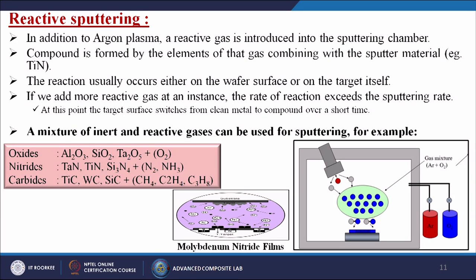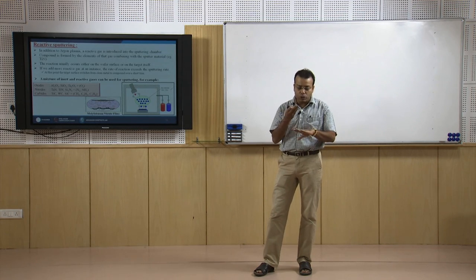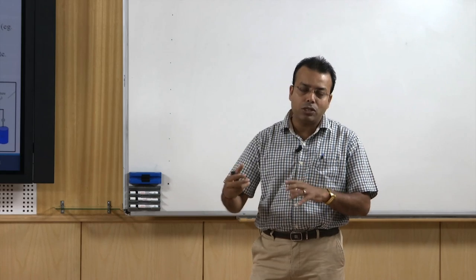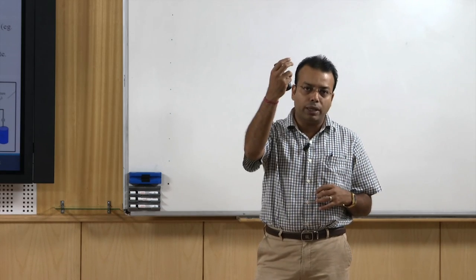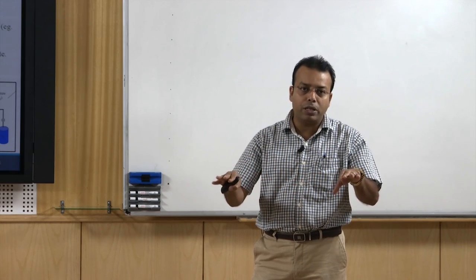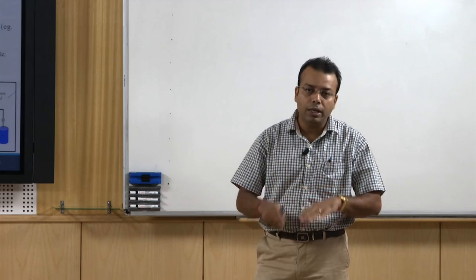A mixture of inert and reactive gases can be used for sputtering. For example, argon gas along with oxygen are both introduced into the chamber; they create ions that hit the target material, and the oxygen and target material ions form a new material that deposits onto the substrate. For oxides we use alumina oxide, silicon dioxide, or tantalum oxide plus oxygen. For nitrides — tantalum nitride or titanium nitride — a mixture of nitrogen and ammonia gases is used. For carbides, titanium carbide or tungsten carbide can be made.